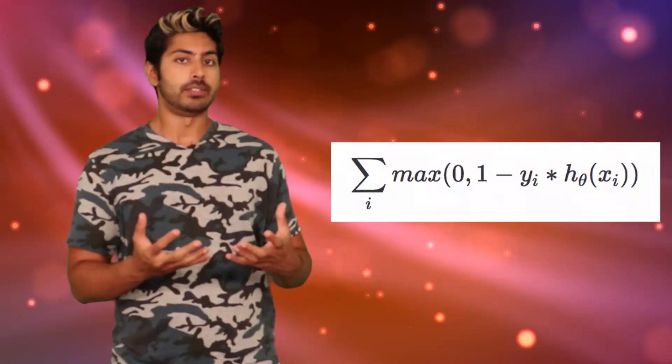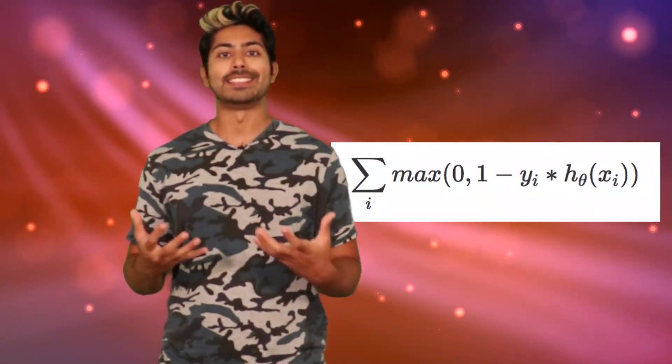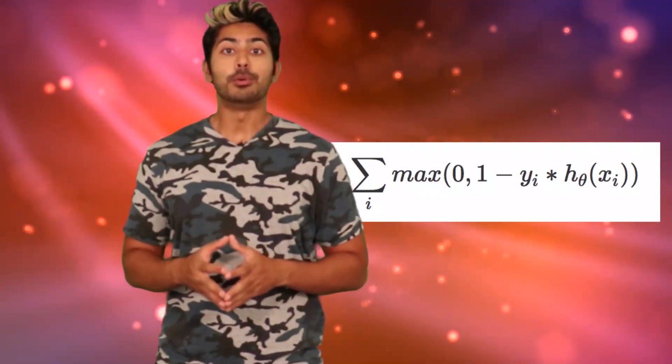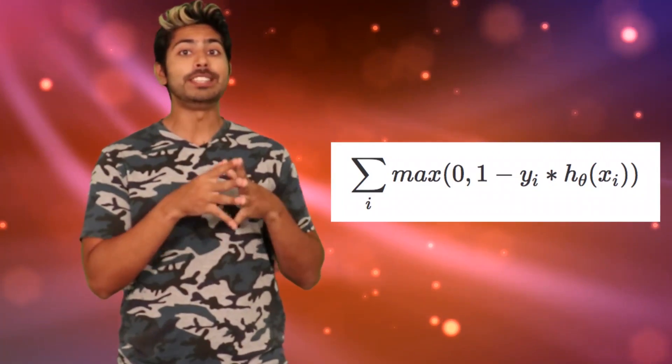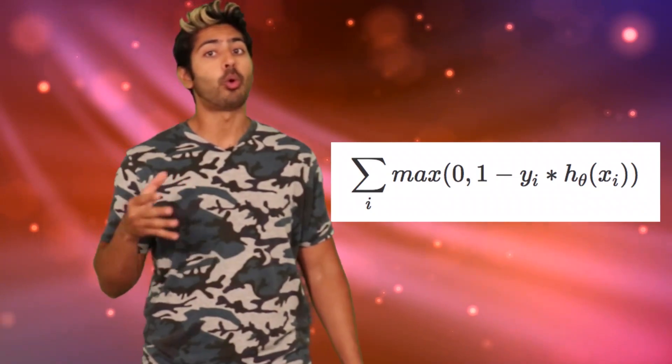We can formalize this by writing it out in the case of binary classification. Here, our labels y are either 1 or negative 1, so the loss is only 0 when the signs match and h of x is greater than or equal to 1.